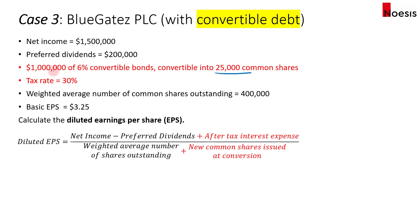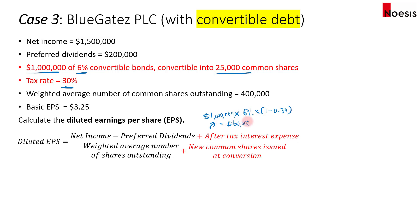For the after-tax interest expense, we take the par amount of the bonds multiplied by the coupon rate of 6%. Taking $1 million times 6% gives us the pre-tax interest expense of $60,000. Then we multiply by 1 minus 0.3 — the tax rate of 30% — so 0.7 times $60,000 gives us $42,000. That is the after-tax interest expense.